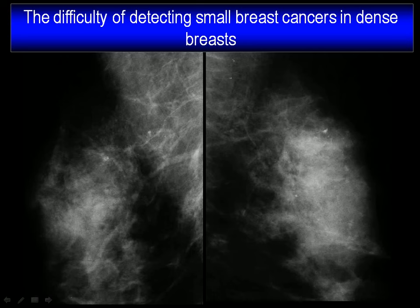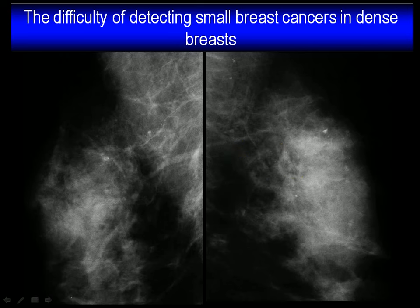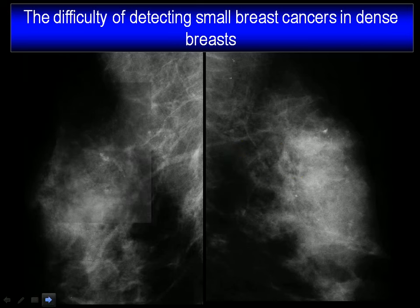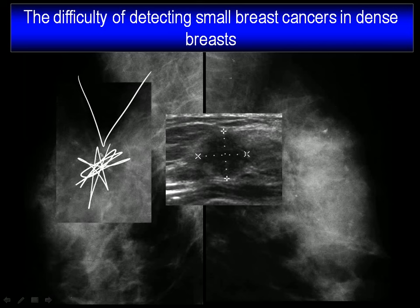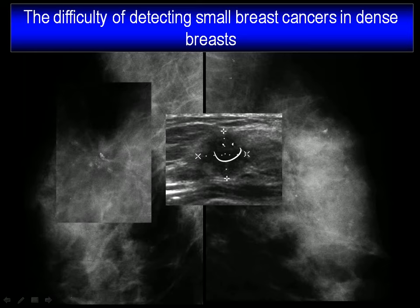Here is an example. This patient has a 25 mm node-positive breast cancer right in front of you. Could you find out whether it's the right or the left? It is in the right breast, as you see this acute angle pointing out where the stellate lesion is. However, the mammogram is negative. But ultrasound can easily find it.